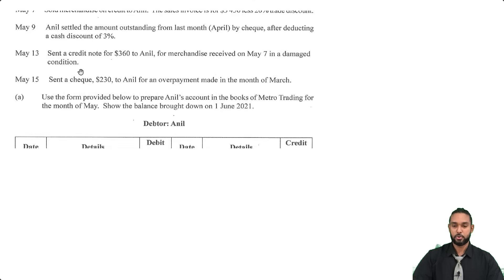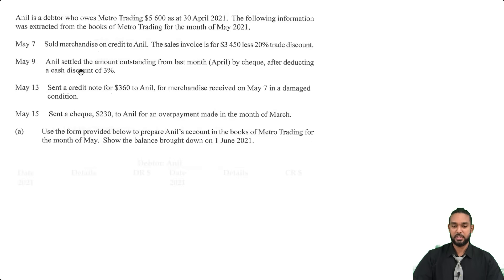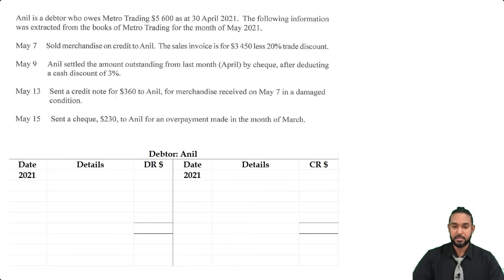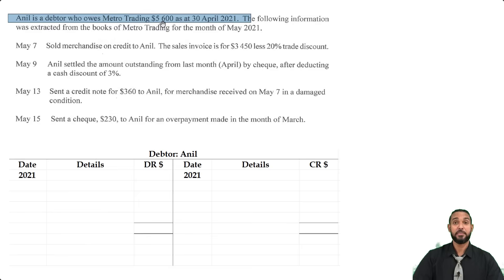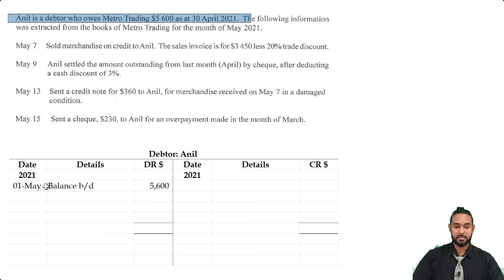Now we're going to scroll back up to the information and start to populate the T-account. The first thing we're going to do is insert the opening balance as at the 1st of May, which is 5,600. Anil is a debtor, debtors are assets, and assets have debit balances at start. So we're going to see that opening balance brought down on the debit side of 5,600.